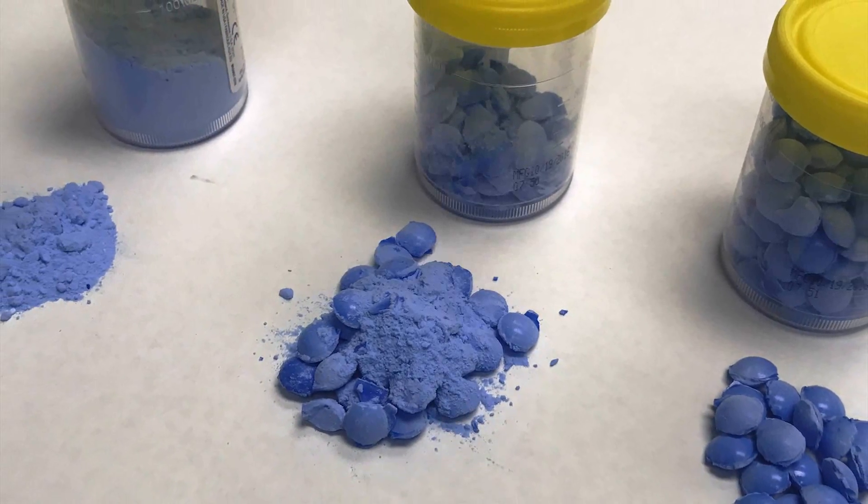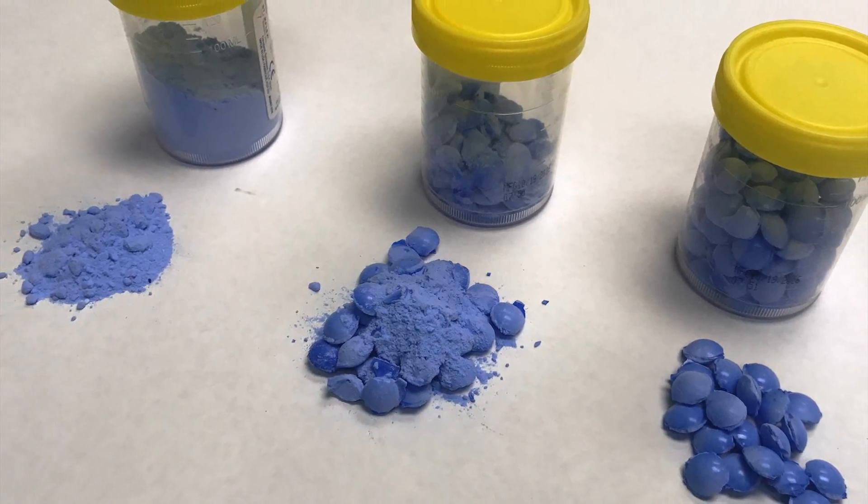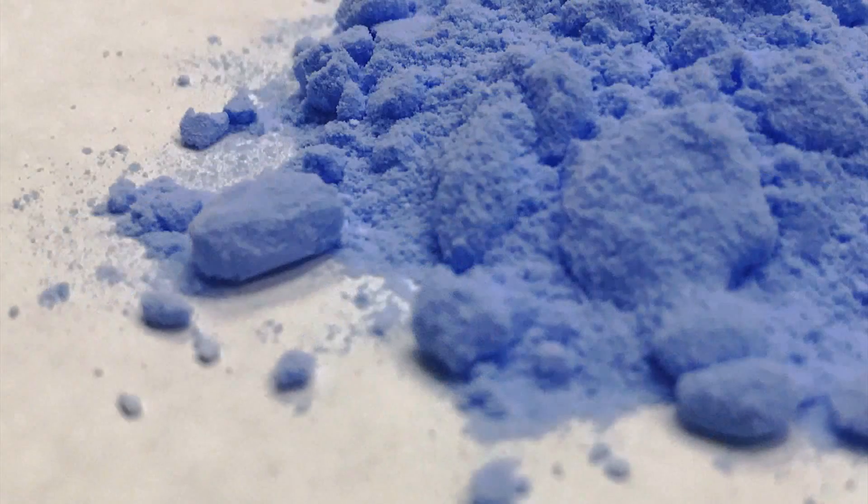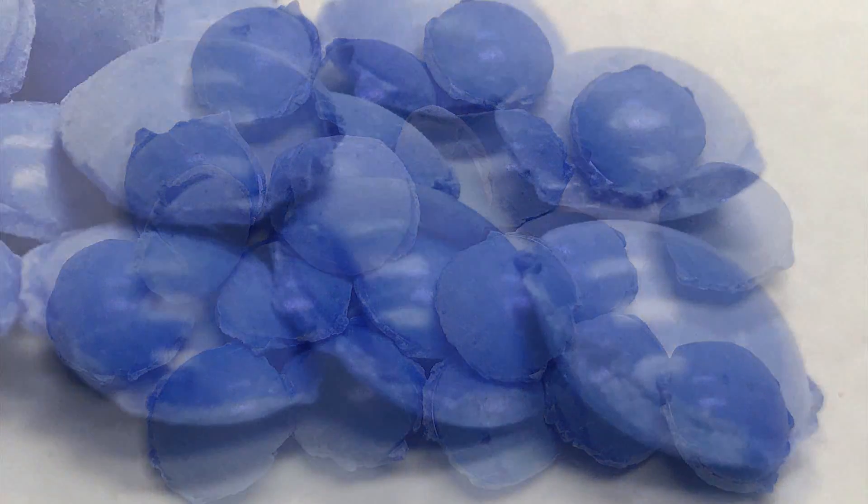Processing powder into uniform, compact, dust-free briquettes involves several steps. The material will go through four phases, from powder to final briquettes.